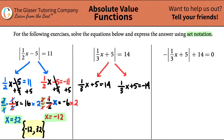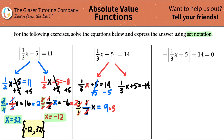I strip away the absolute value and now I'm ready to solve for x. Let's work on the left equation first. It's a plus 5, so I subtract 5 on both sides — that cancels. I'm left with one-third x equals 14 minus 5, which is 9. Now, to get x by itself, it's being multiplied by one-third, so flip the fraction and multiply by 3 over 1, which is essentially 3. The 3s cancel, the 1s cancel. So x equals 27.